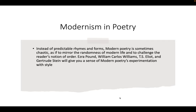In modernist poetry, instead of predictable rhymes and forms, a lot of modern poetry is a little bit chaotic — meant to mirror the randomness of modern life and challenge the reader's notion of order. We see this in Ezra Pound, William Carlos Williams, T.S. Eliot, and Gertrude Stein. Remember there's no single rule for any time period or poet — Edna St. Vincent Millay, for instance, wrote a lot of sonnets, a very structured form, but she definitely veered off the beaten path in terms of subject matter.